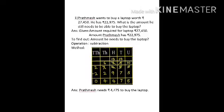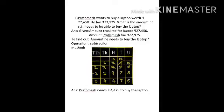Now we will subtract 22,975 from 27,450. First you have to write: given — amount required for the laptop is Rs. 27,450, and the amount Prathamesh has is Rs. 22,975. What you have to find: amount he needs to buy the laptop. Operation: subtraction. Now make the columns — 10,000s column: 2, 1,000s column: 7, 100s column: 4, 10s column: 5, units column: 0. Subtract 22,975 from that.